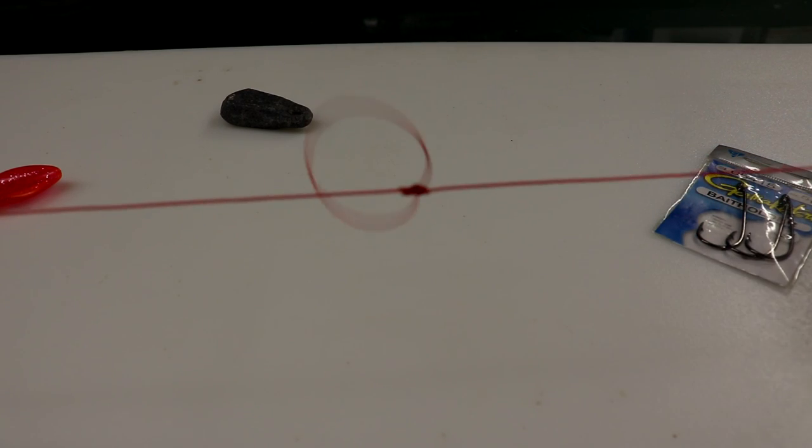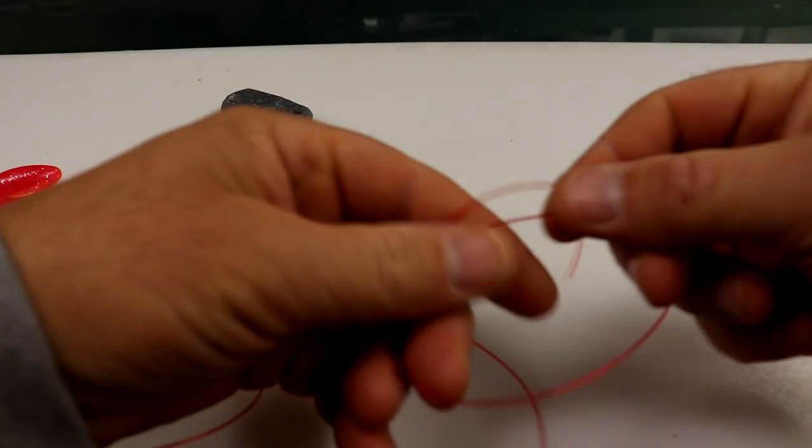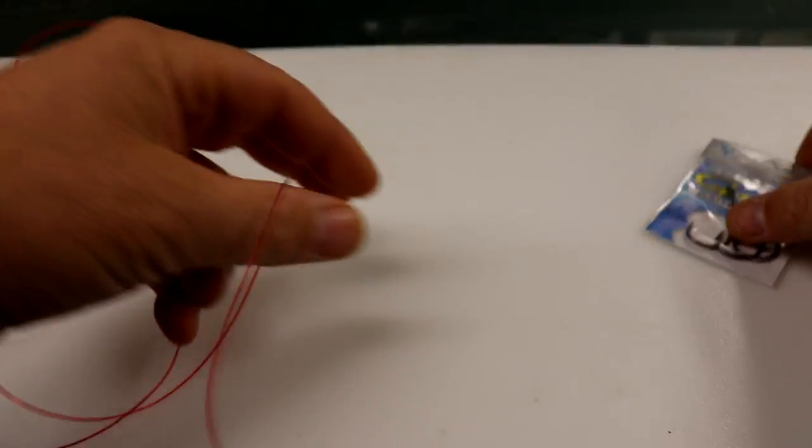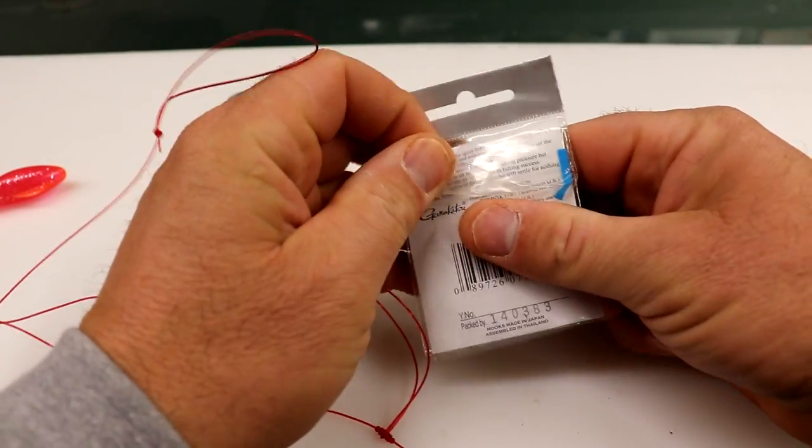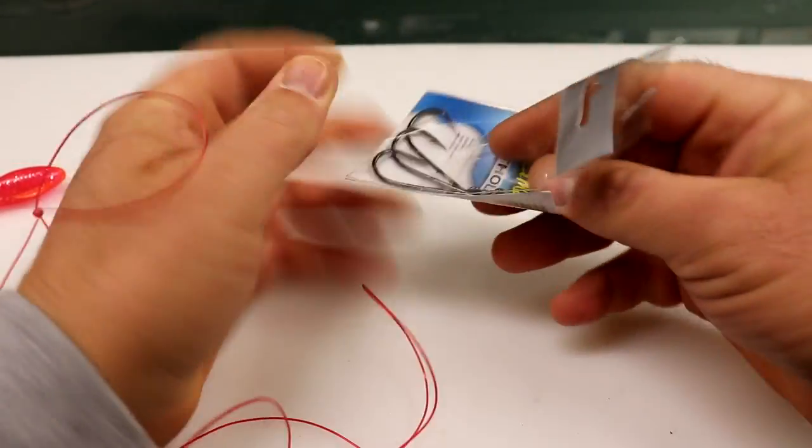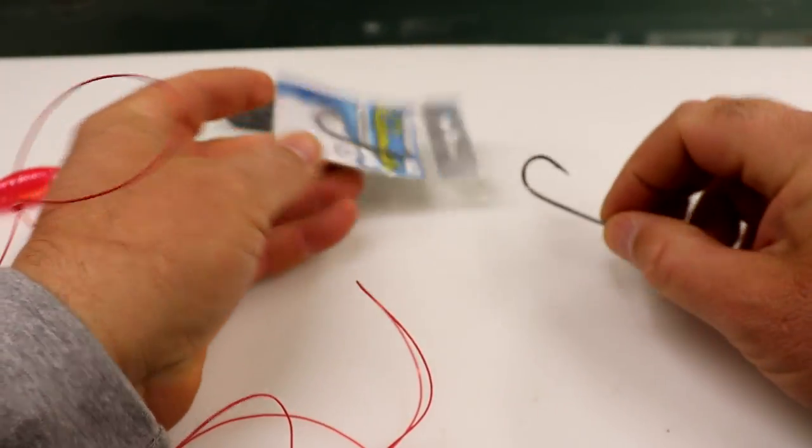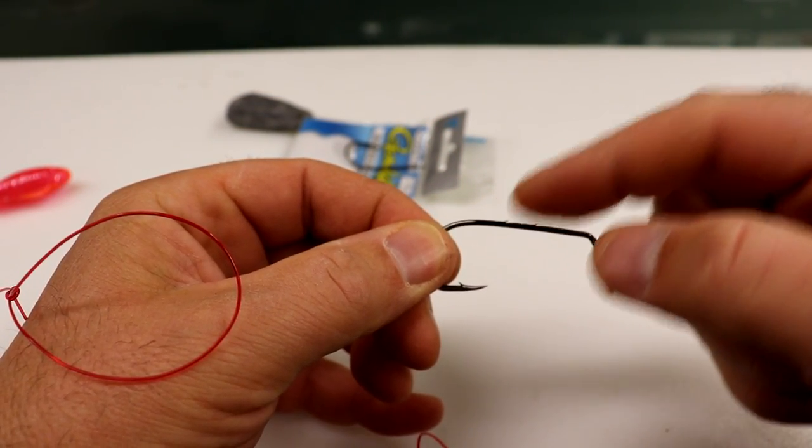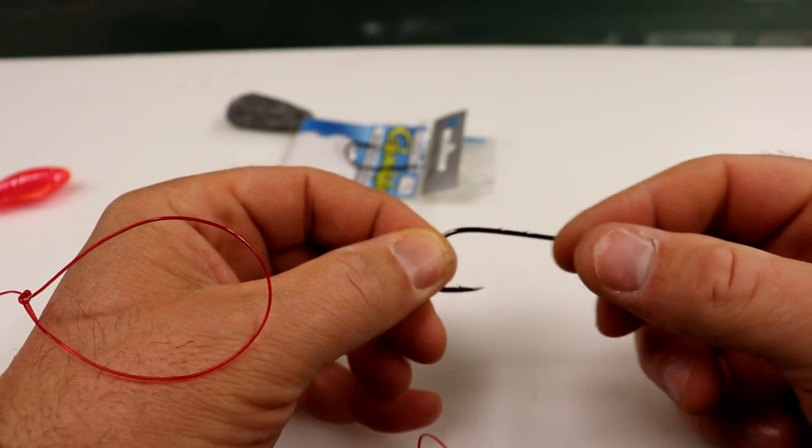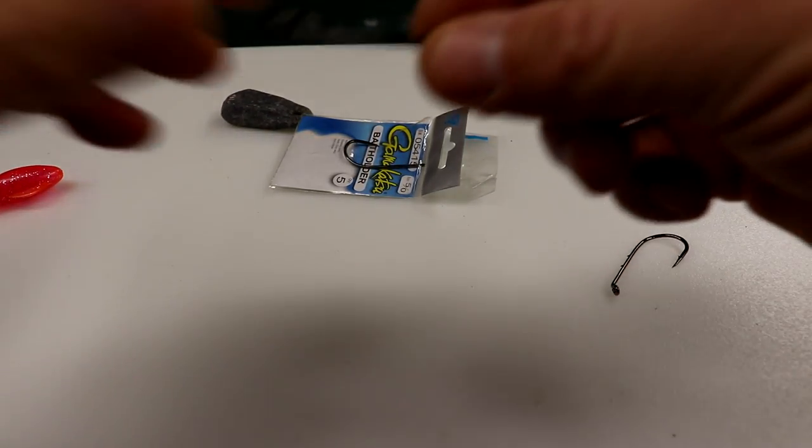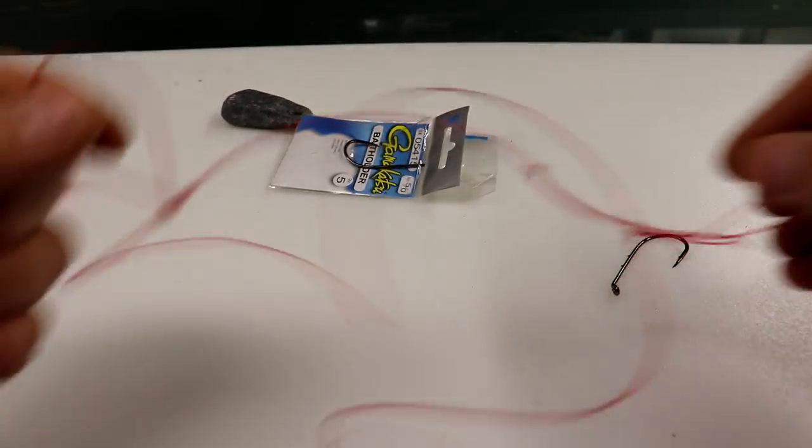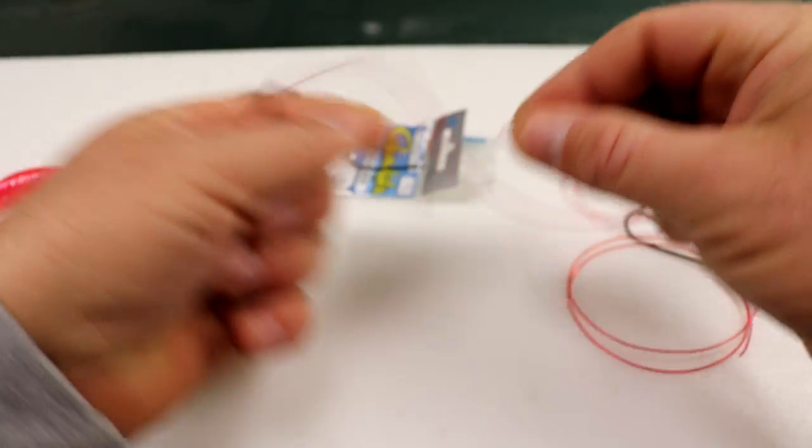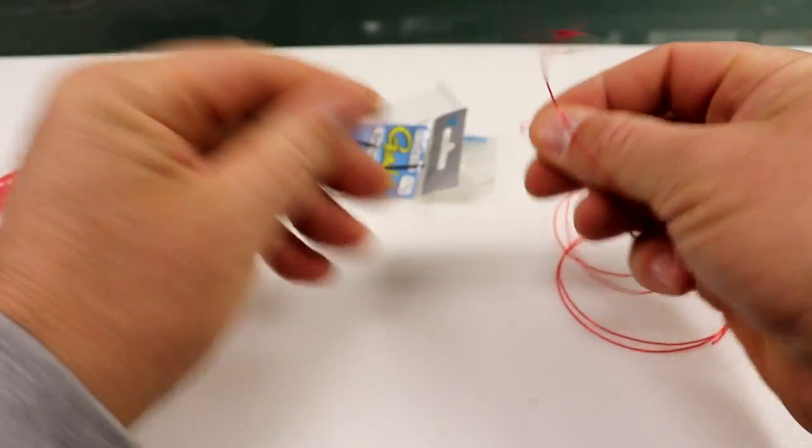So that's where your sinker's going to go, your first hook, and then your second hook right here. This would go either to an Albright or FG to your mainline, or you could just put a simple spro swivel. Now I'm going to get my hooks. The reason why I like to use these bait holder hooks - I'm not sure if you can see it on camera, but there's little barbs right there that's going to help hold this plastic bait. Also your clam bait is going to help it to stay on the hook a little bit better.